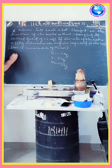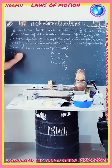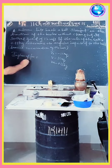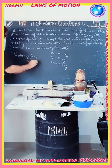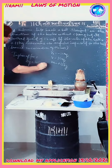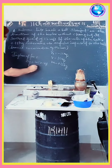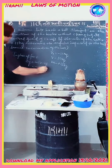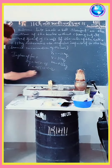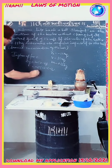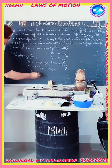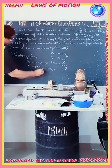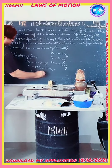Now, impulse of force — that is delta P — is equal to M into (V minus V₀). Keeping the values here: 0.15 into (12 minus of minus 12). So you get 0.15 into 24.